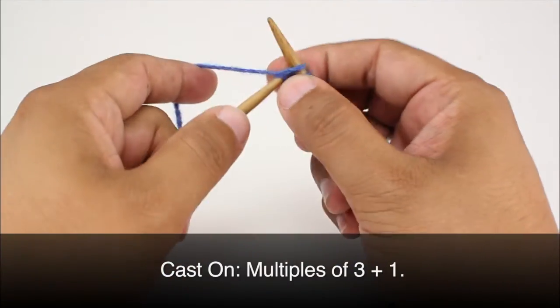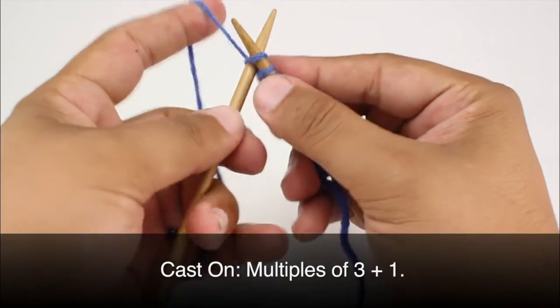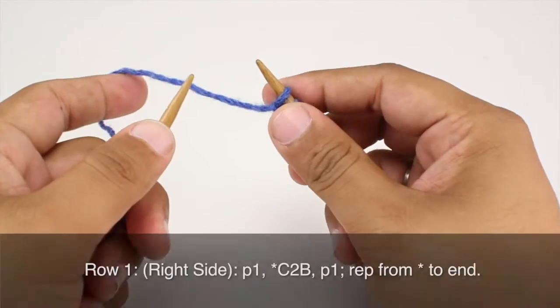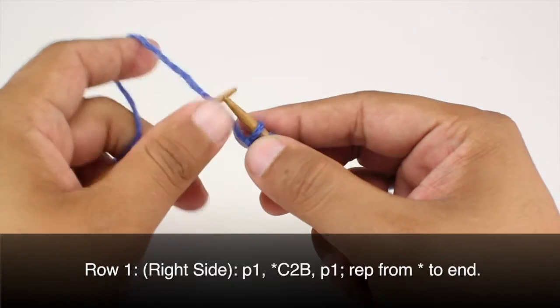To begin this stitch you must cast on in multiples of 3 plus 1. Row 1: Beginning on the right side of our work we're going to purl 1.